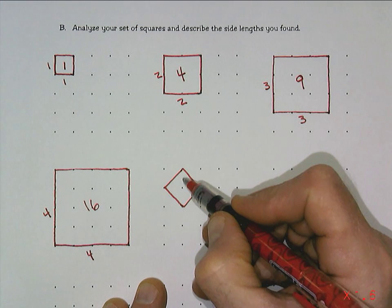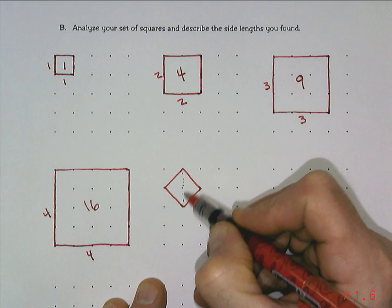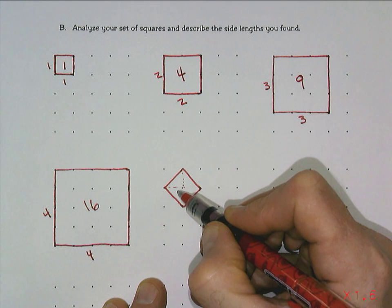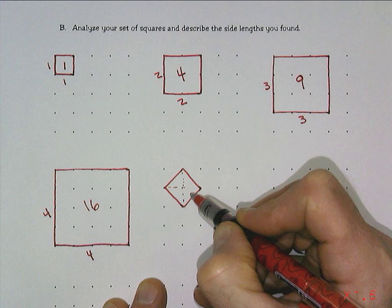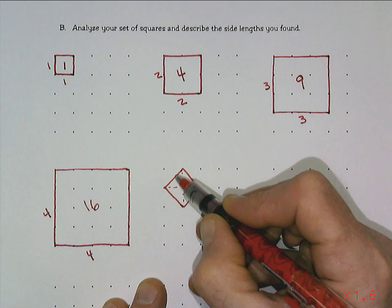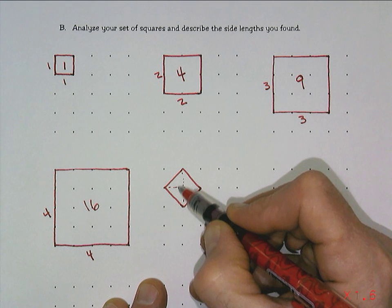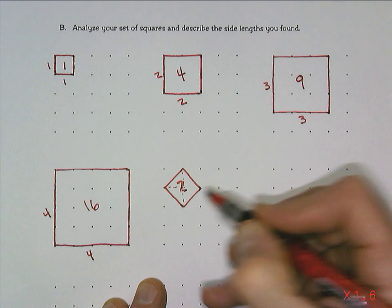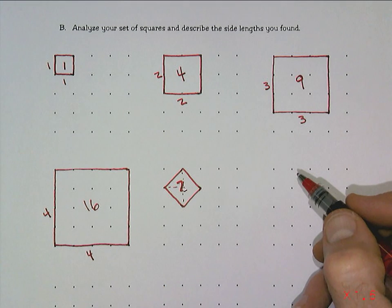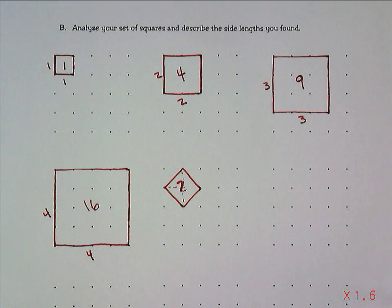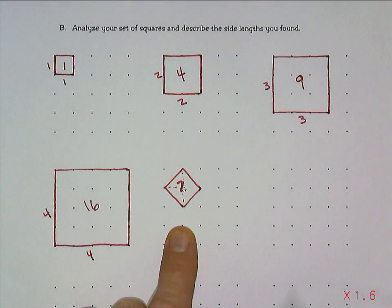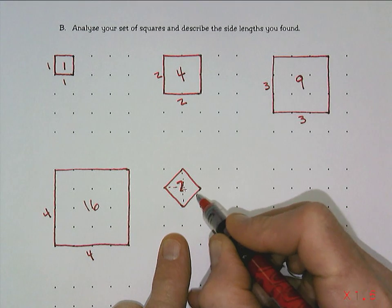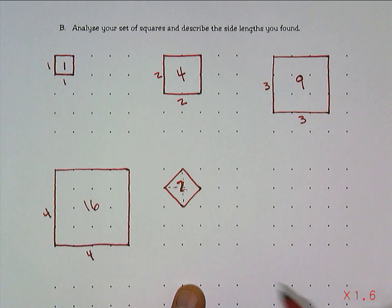We can find the area of this tilted square because it's really four halves — this is a half, another half, another half square, and another half square. Each of these halves gives us a total of two square units in this square. We'll come back to the side length in just a moment, since it's not a whole number anymore.